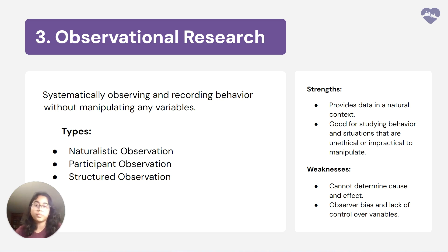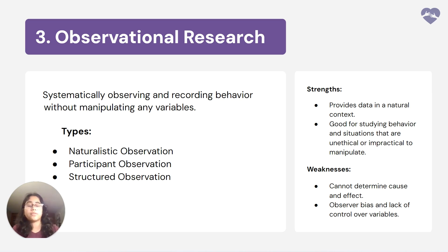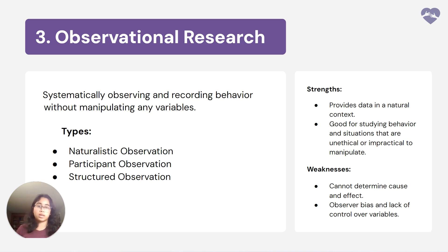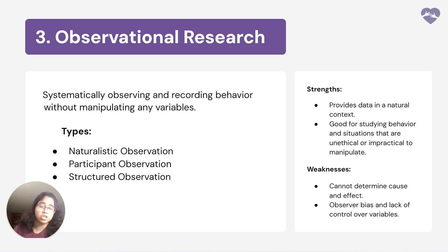Now we have the observational method, which is similar to correlational research in that you don't manipulate the variables, but you also don't focus on comparison. The types are naturalistic, participant, and structured. An example is studying the effect of a river's health over a few years. A strength is that it provides data in a natural context — you just observe the river without changing anything. This is also good for situations that are unethical or impractical to manipulate, such as when you can't alter a patient's medication.